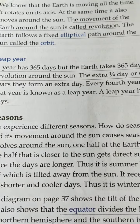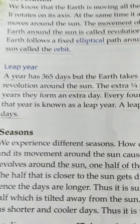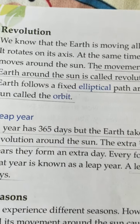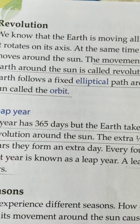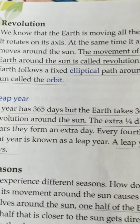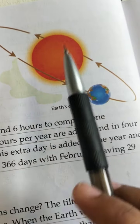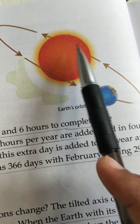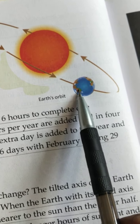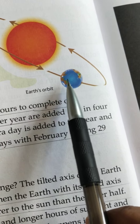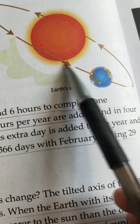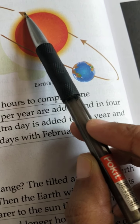Quite a number of times you have heard about the term revolution, but you are not exactly clear what revolution is. Before we proceed with the chapter, let me tell you what revolution is. Revolution means the movement of the earth around the sun. With a diagram I can explain — here you can see a diagram, this is the sun and this is the earth, the blue one. When the earth moves around the sun, it is known as revolution.